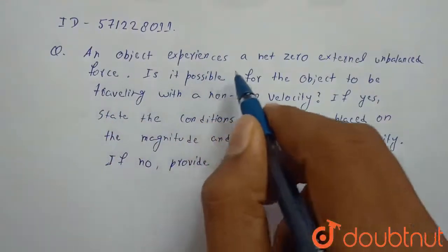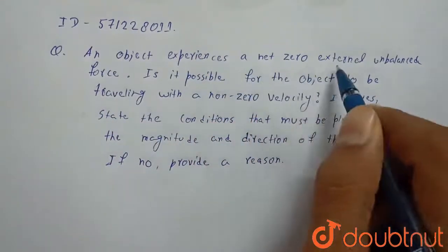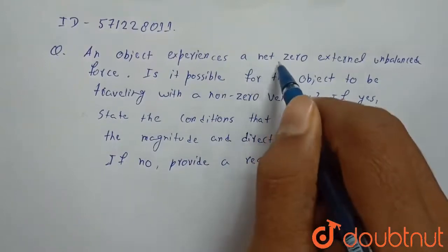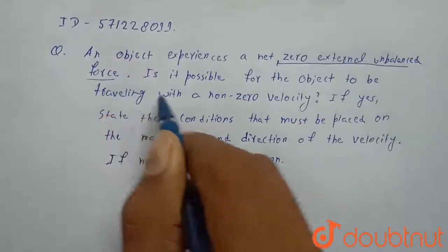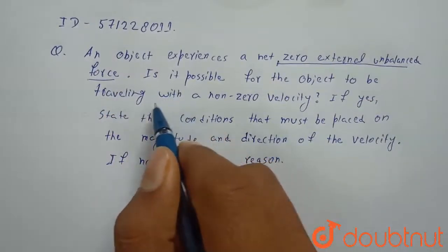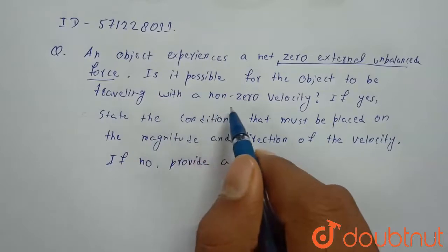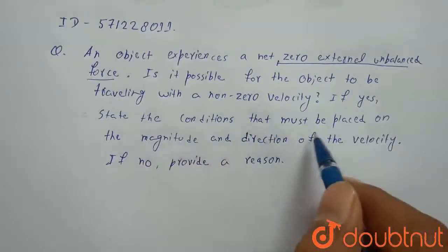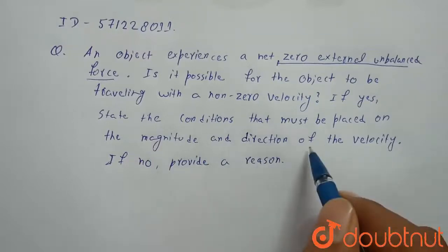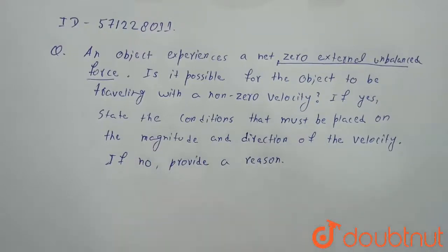An object experiences a net zero external unbalanced forces. Is it possible for the object to be travelling with a non-zero velocity? If yes, state the conditions that must be placed on the magnitude and direction of the velocity and if no provide a reason.